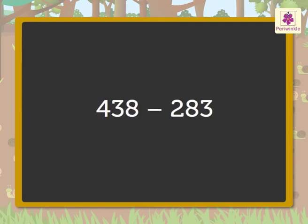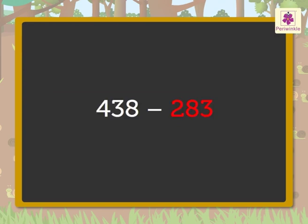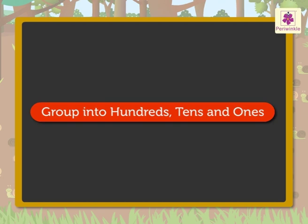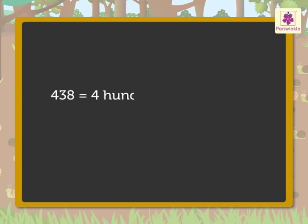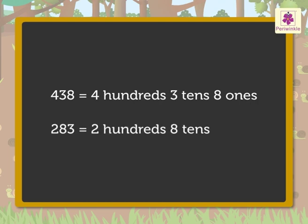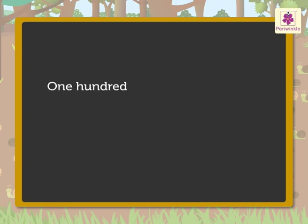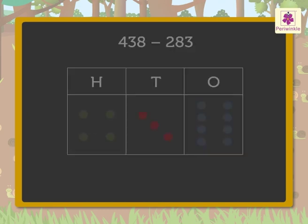We get the answer by finding the difference between four hundred thirty-eight and two hundred eighty-three. So let us group both these numbers into hundreds, tens, and ones, and then subtract them. There are four hundreds, three tens, and eight ones snails on the ground, out of which two hundreds, eight tens, and three ones hid themselves.